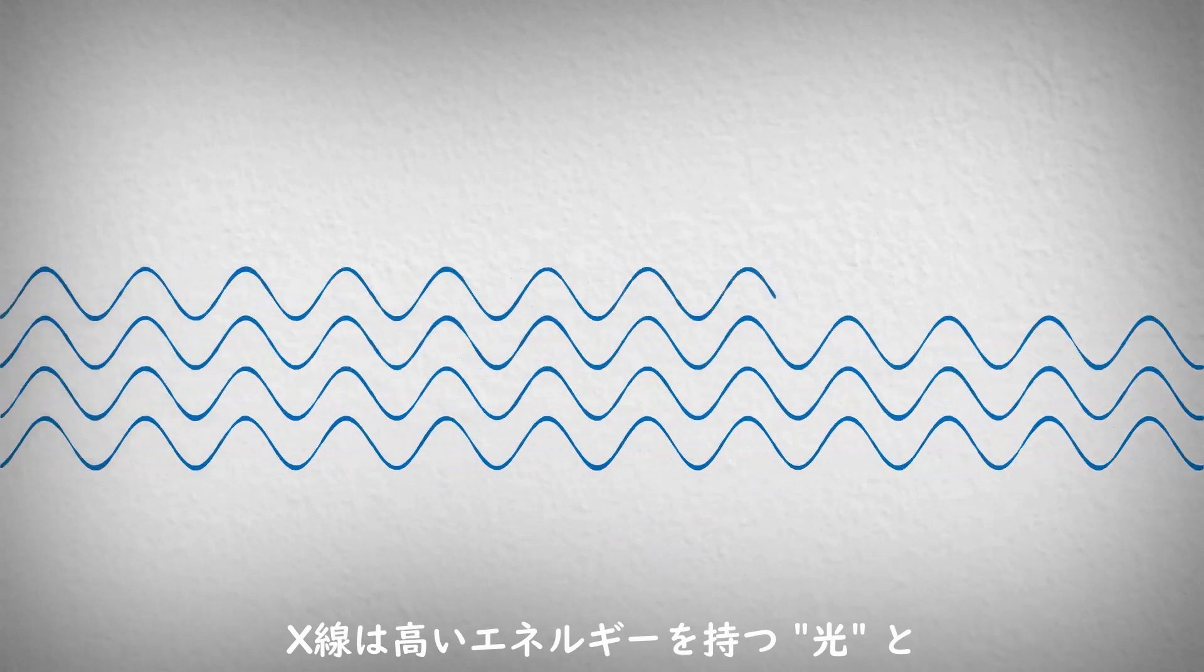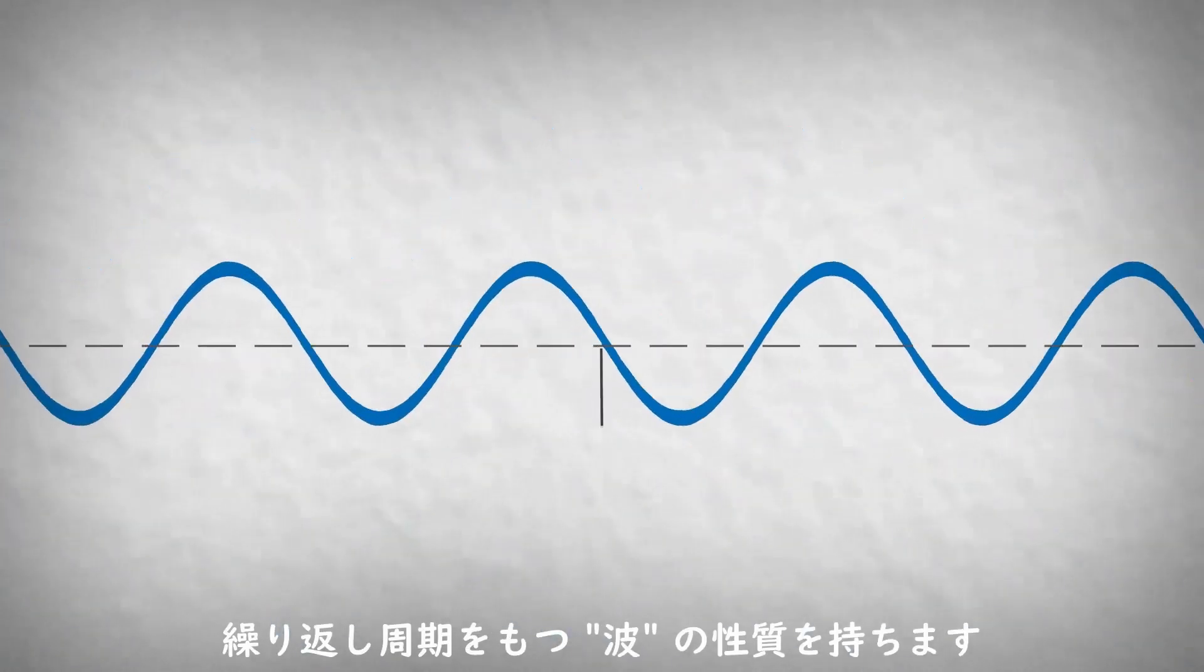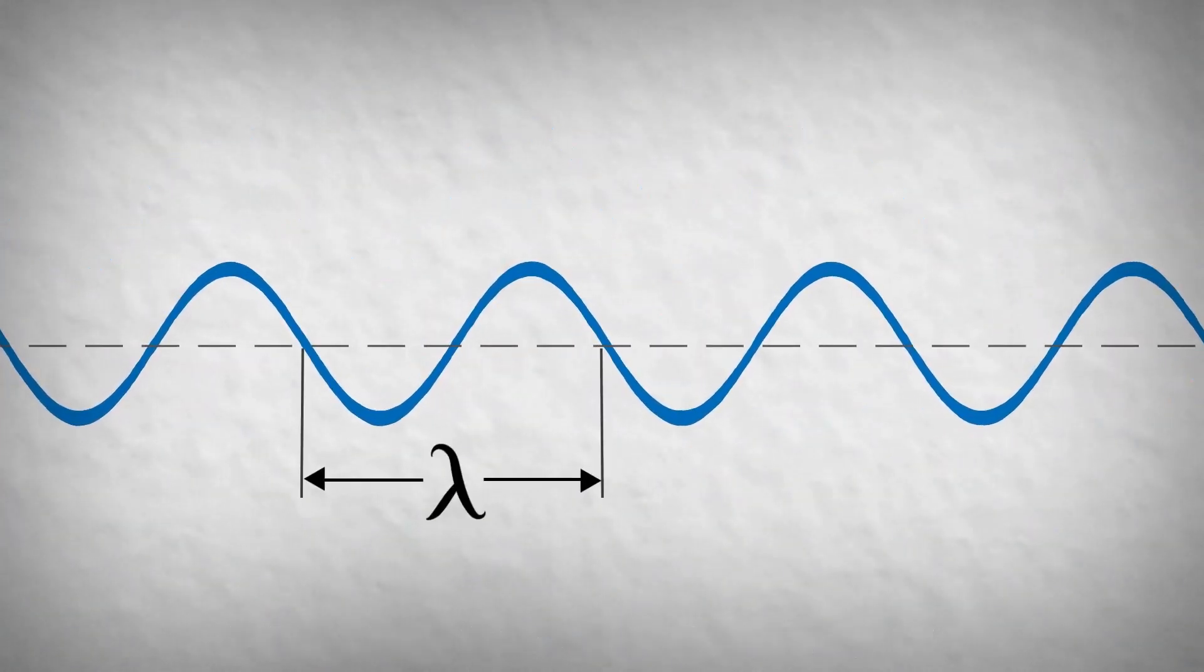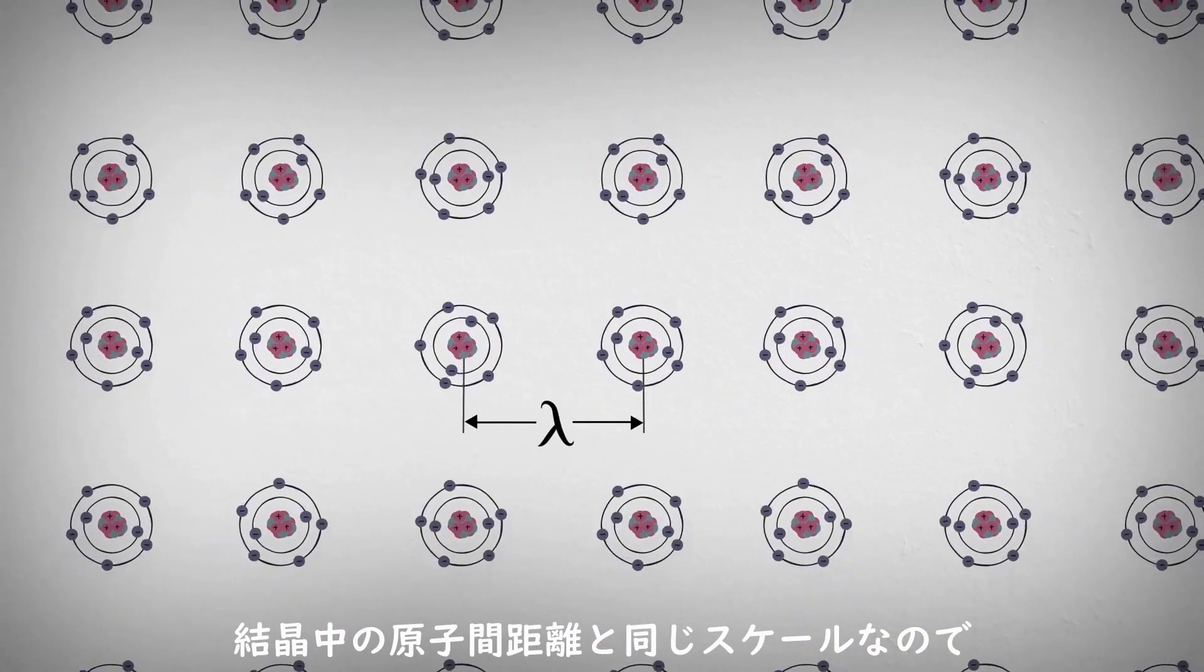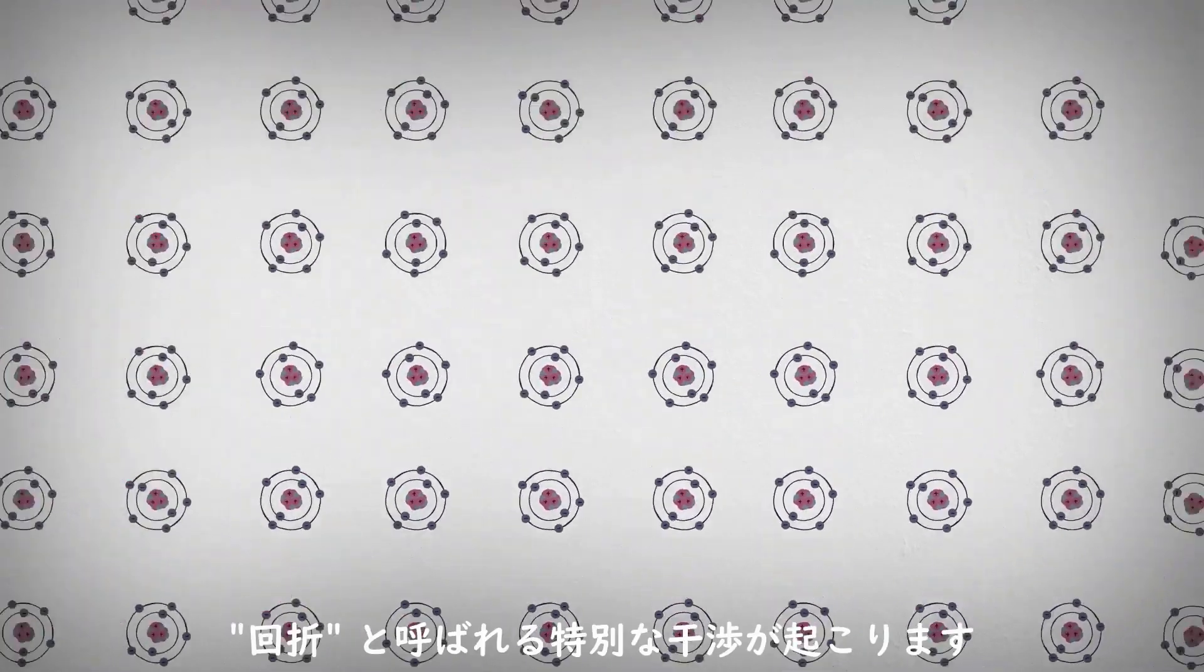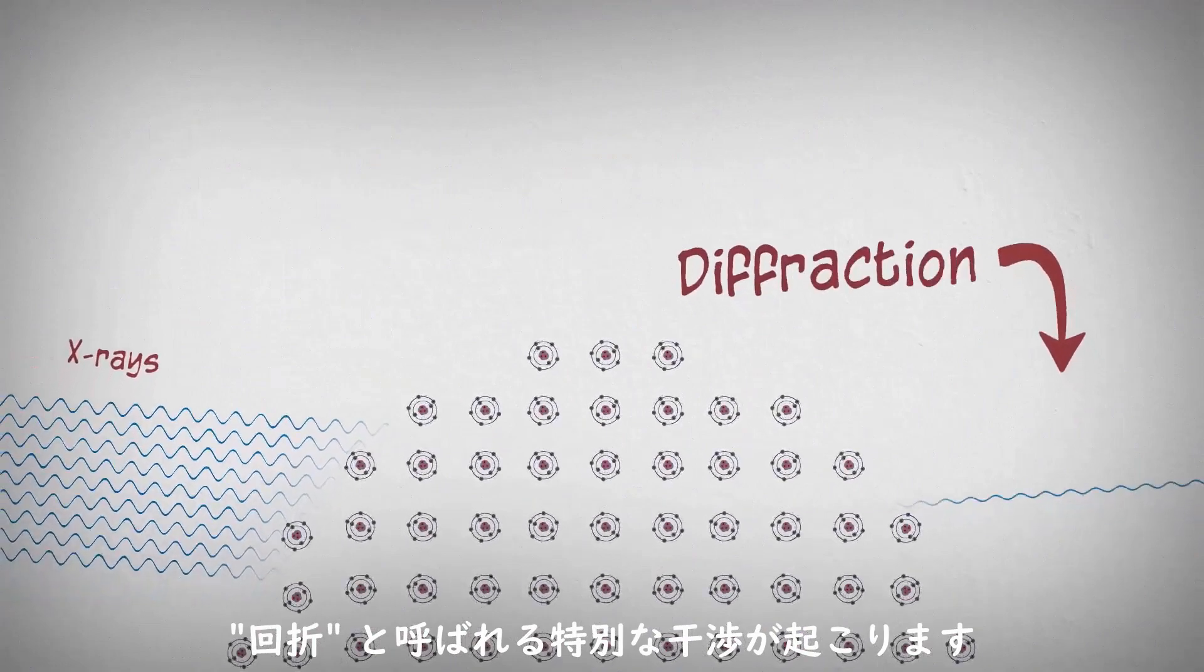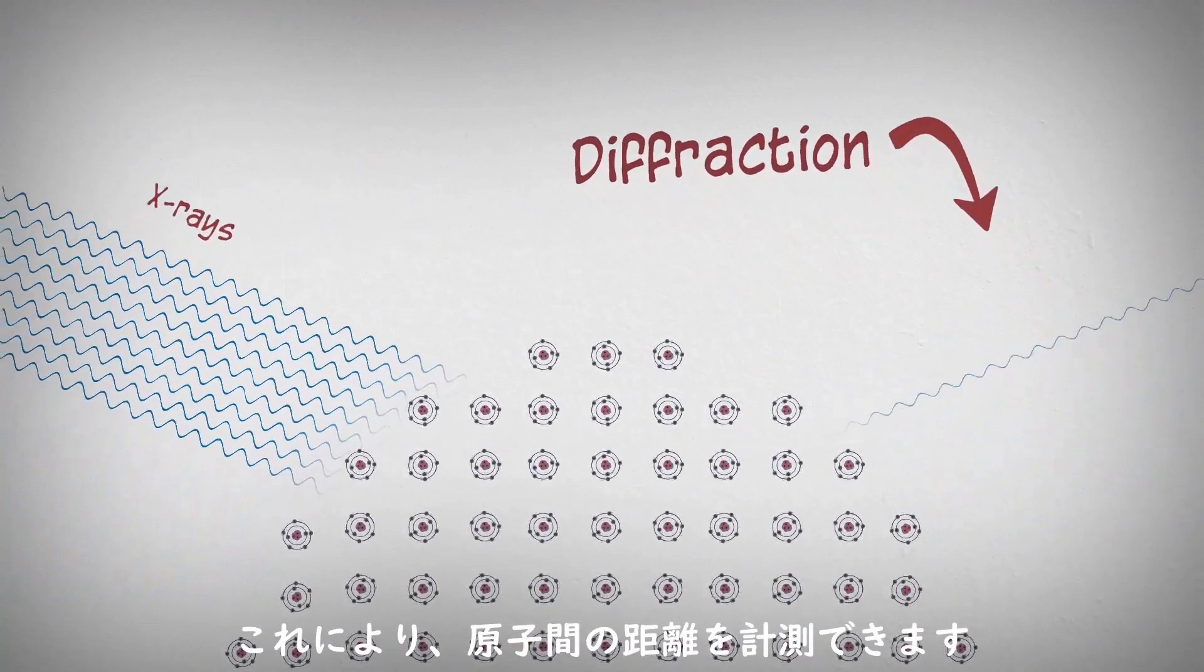X-rays are high energy light with a repeating period called the wavelength. Since the wavelength of an X-ray is similar to the distance between atoms in a crystal, a special interference effect called diffraction can be used to measure the distance between the atoms.